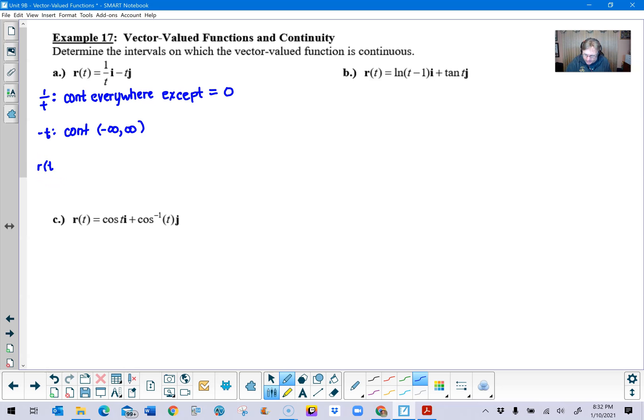So we can just simply say r of t, the vector r of t, is continuous. And I think what I'm going to do is use interval notation. I'll say we are continuous on negative infinity to zero and on zero to infinity, and that would take care of this guy.